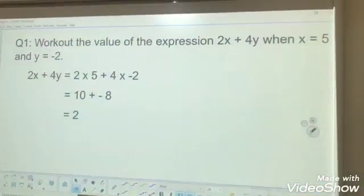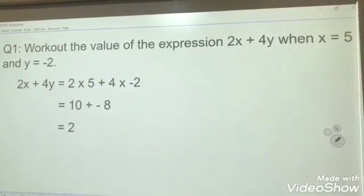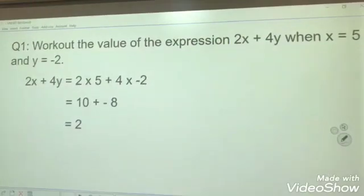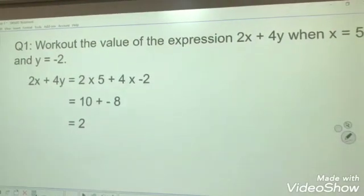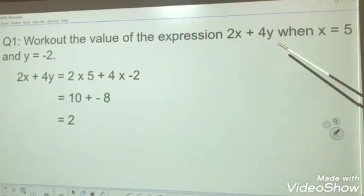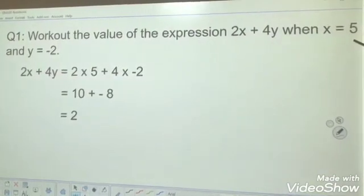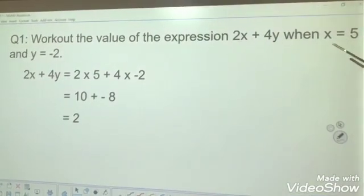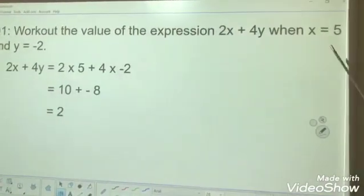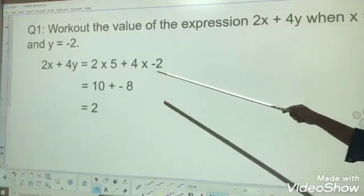Now, you can see one question. Work out the value of the expression 2x plus 4y when x equals 5 and y equals minus 2. From the question, you know this is the expression: 2x plus 4y. And it is given what is the value for x and what is the value for y. x equals 5, y equals minus 2.